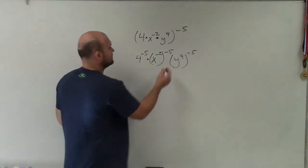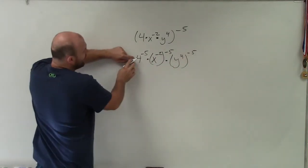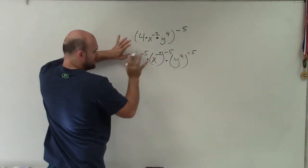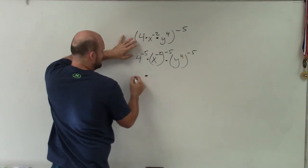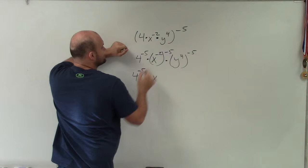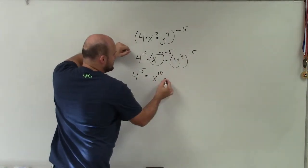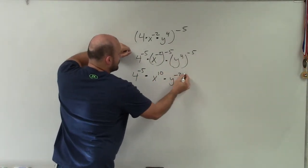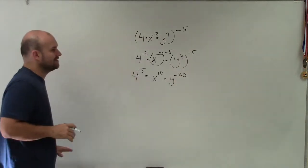So now, let's go ahead and distribute this. Before I even get to this, I'll explain that one in the next one. I have 4 to the negative fifth. Here, I have x. Negative 2 times negative 5 is now going to become x to the 10th times y to the negative 20th. Now, I can't simplify those any further.